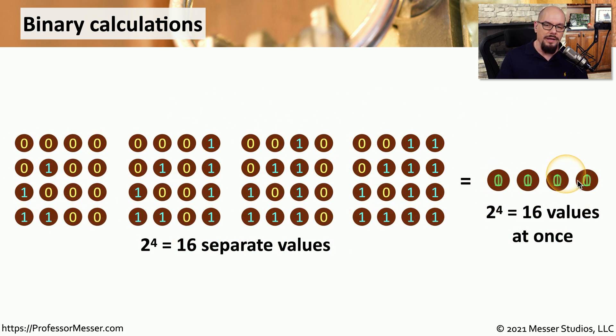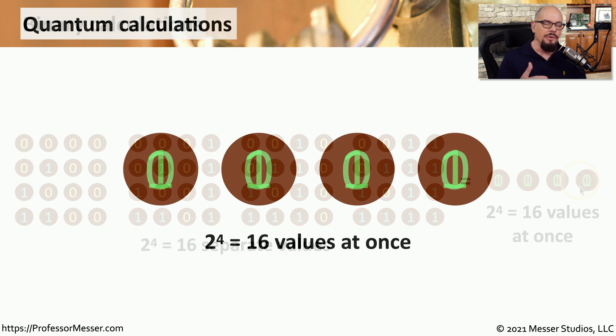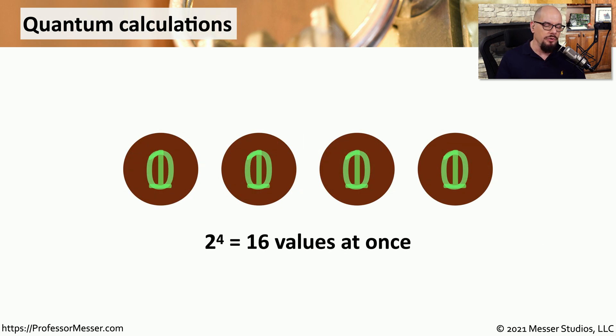With quantum computing, we can represent all 16 of those individual classic bits as four individual qubits, because all of those are both 0 and 1 simultaneously. So if it only takes four individual qubits to represent 16 values, we can start to scale this up very quickly.